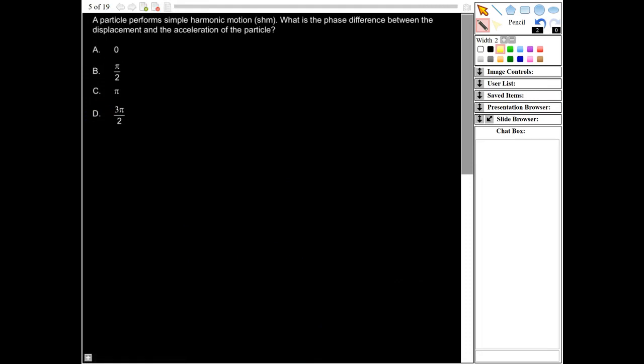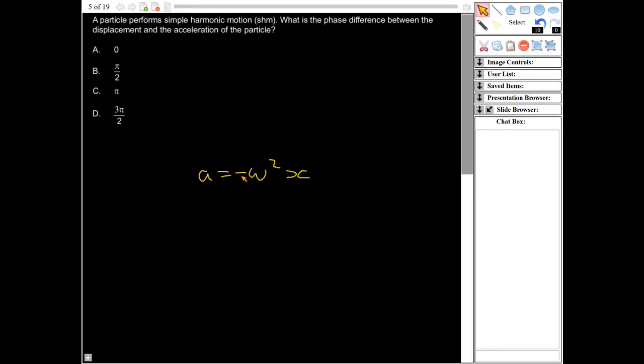Okay, this question says a particle performs simple harmonic motion, SHM. What is the phase difference between the displacement and the acceleration of the particle? So in simple harmonic motion you should know that displacement is proportional to acceleration but in the opposite direction. So a is equal to minus omega squared x is the equation. So this is the acceleration here and it's proportional to the displacement but in the opposite direction.